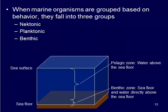The first way we divide things up is where an organism lives based on their behavior and kind of where they live. We have three different groups: nectonic, planktonic, and benthic. This is all based on where in the water column these organisms are hanging out and moving in and out of.